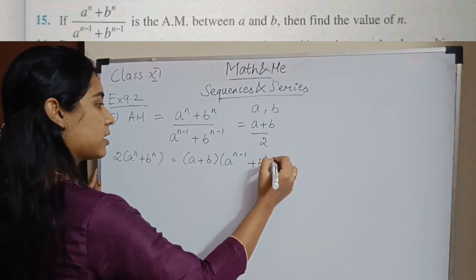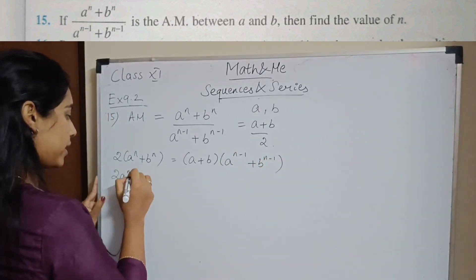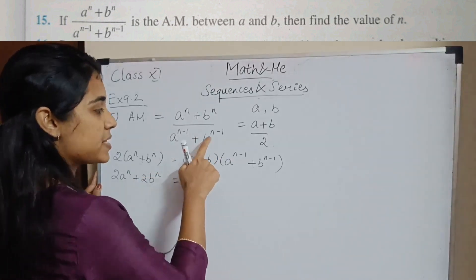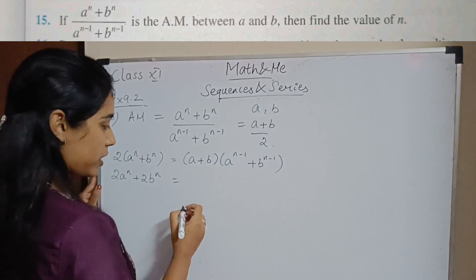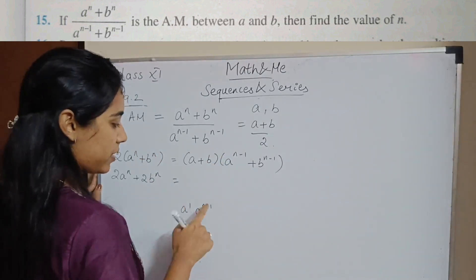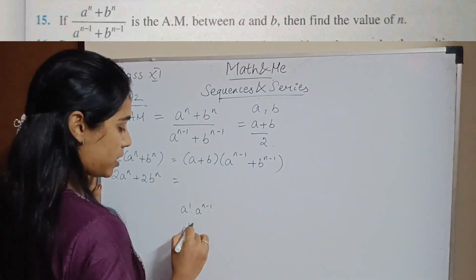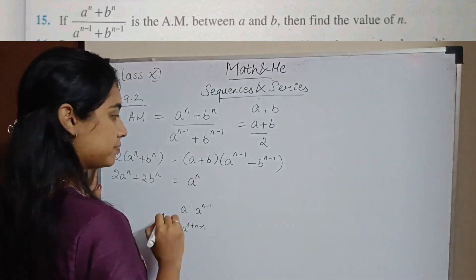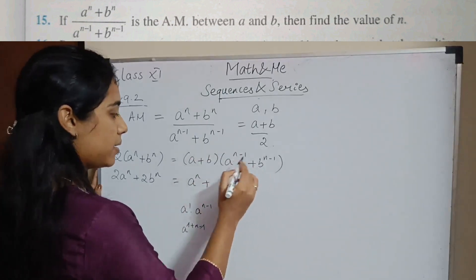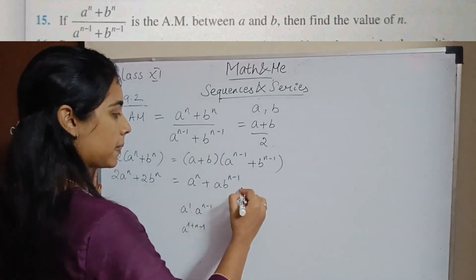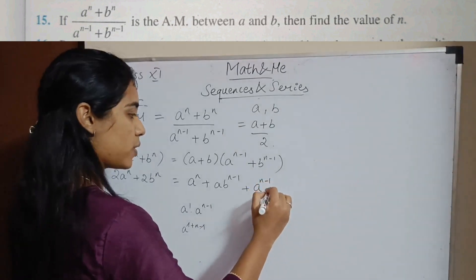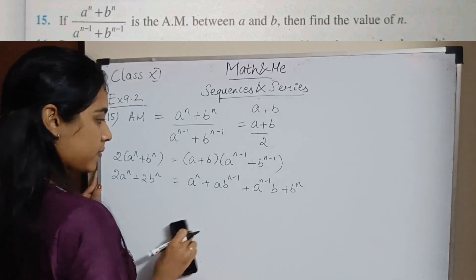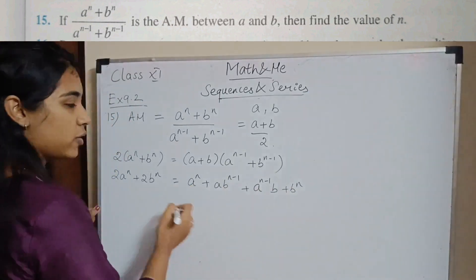Expanding the right-hand side: 2aⁿ + 2bⁿ = a · aⁿ⁻¹ + a · bⁿ⁻¹ + aⁿ⁻¹ · b + b · bⁿ⁻¹. Using index laws, a × aⁿ⁻¹ = aⁿ and b × bⁿ⁻¹ = bⁿ. So we get: 2aⁿ + 2bⁿ = aⁿ + a·bⁿ⁻¹ + aⁿ⁻¹·b + bⁿ.